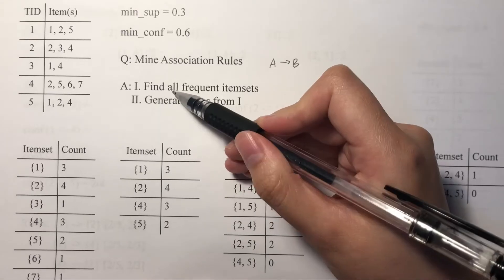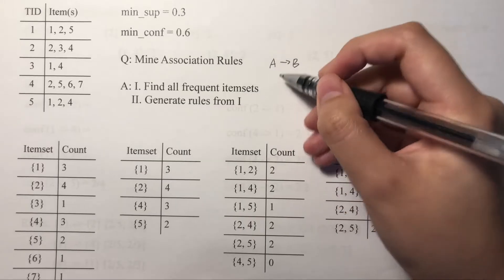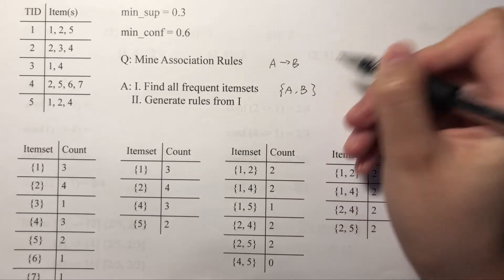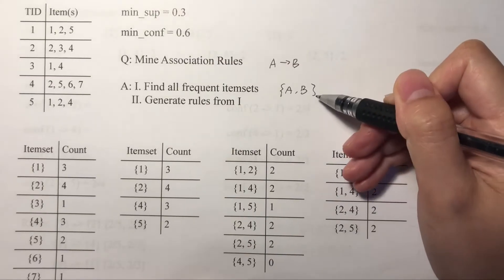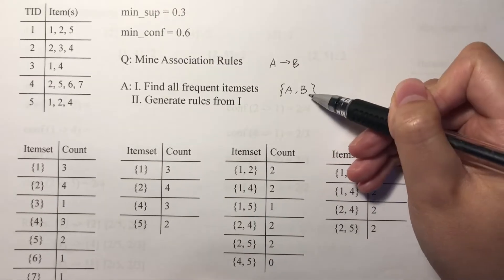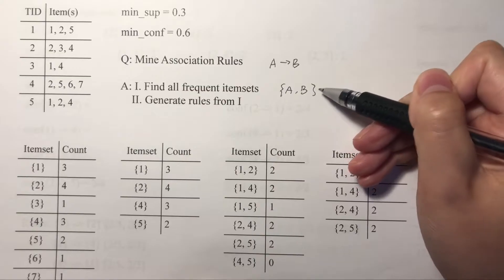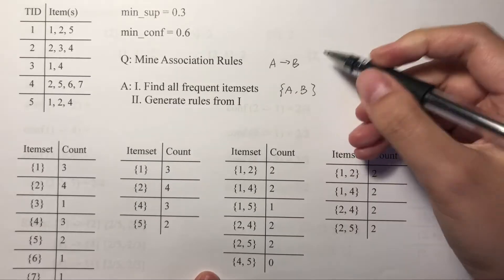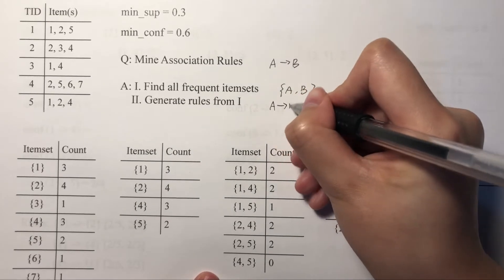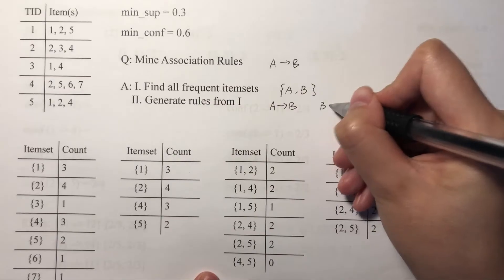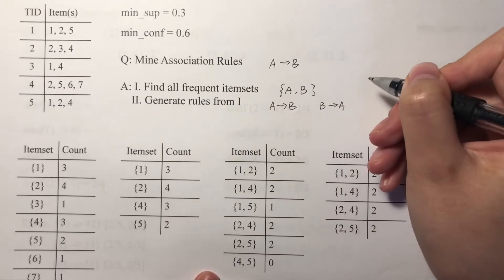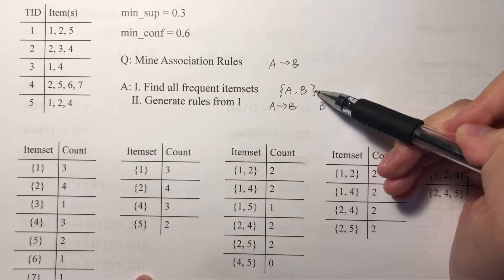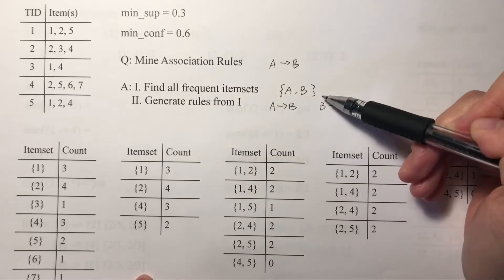The first step is to find all frequent itemsets. An itemset means customers often buy product A and product B together in a transaction. We can then generate rules from this itemset — rules like 'if A then B' or 'if B then A'. This is the second step: generate rules from the frequent itemsets found in the first step.